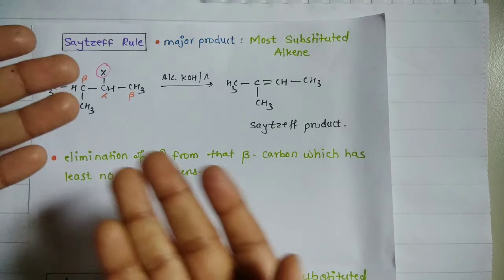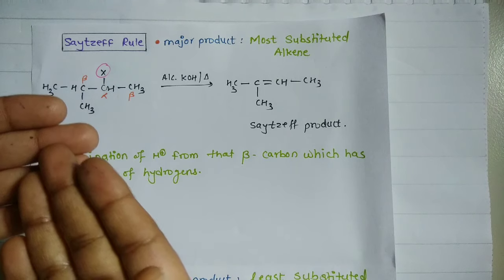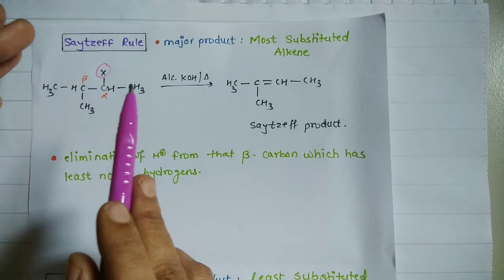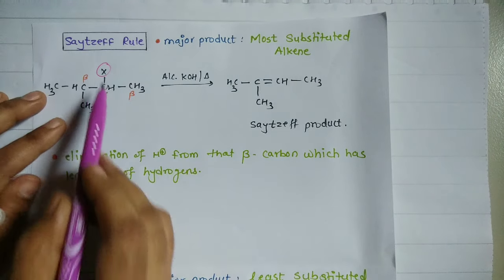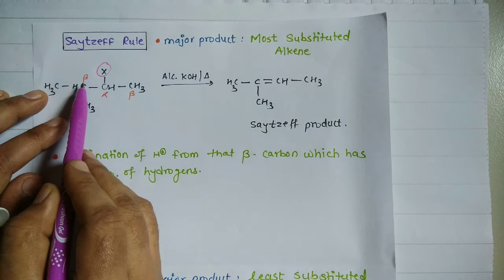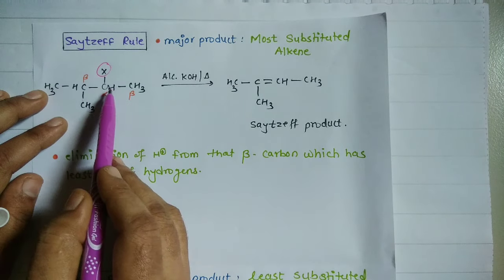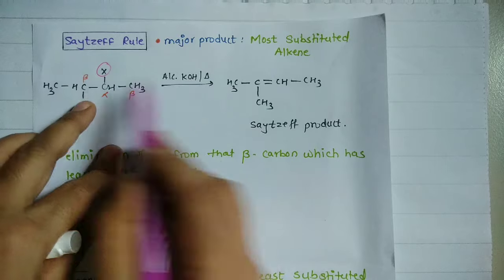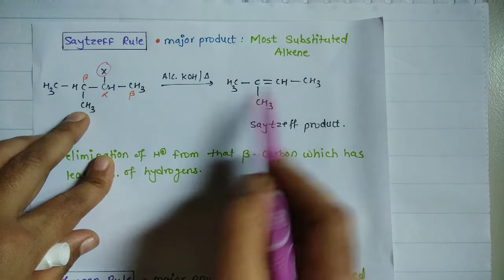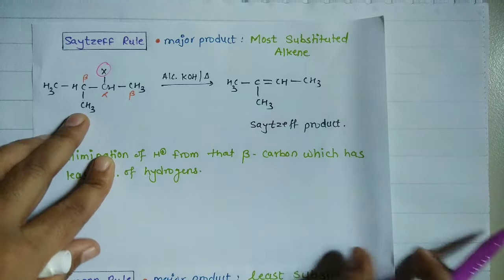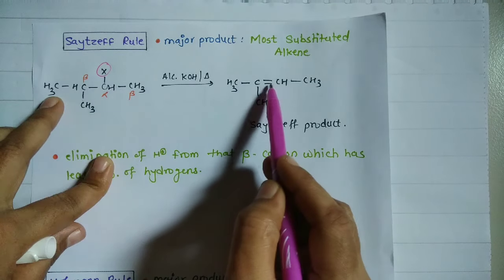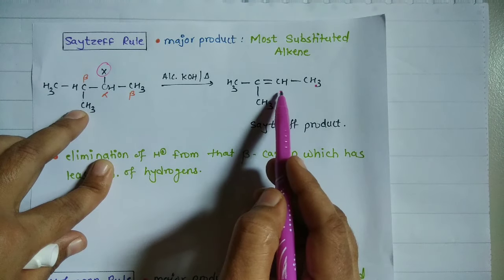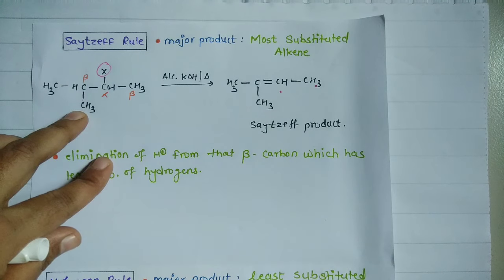Elimination reaction is the removal of two atoms, two groups, or one group of atoms from your molecule. We have to remove the HX group — hydrogen from the beta carbon and the leaving group from the alpha carbon. The product will be CH₃–C=CH–CH₃, forming a double bond.